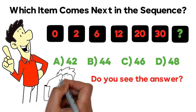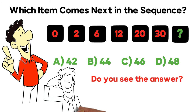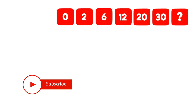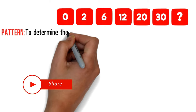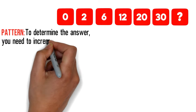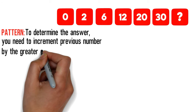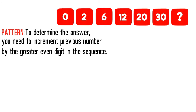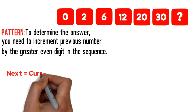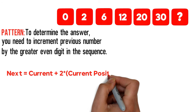As with any type of question, the key is to determine the pattern. In this particular case, you need to increment the previous number by the next greater even digit in the sequence. You can even come up with a formula: the formula to determine the next number would be current number plus 2 multiplied by the current position.